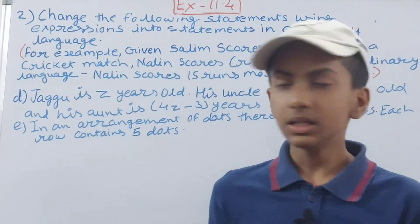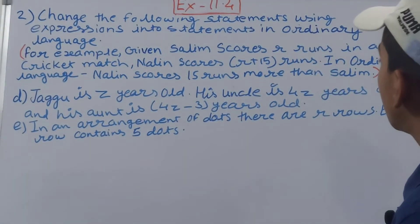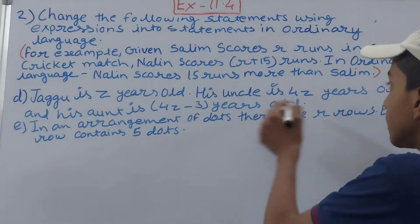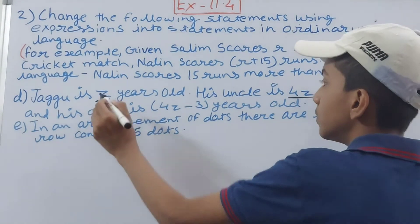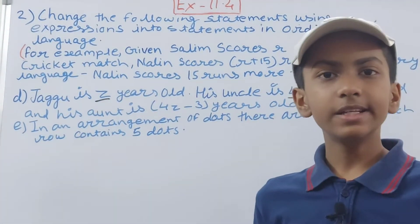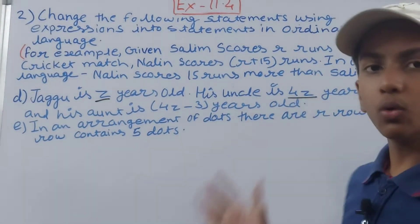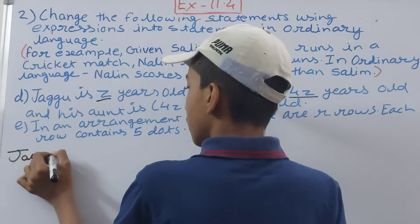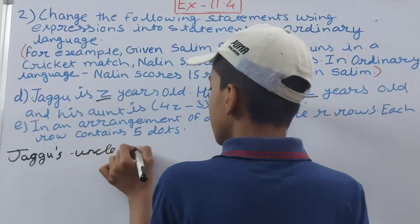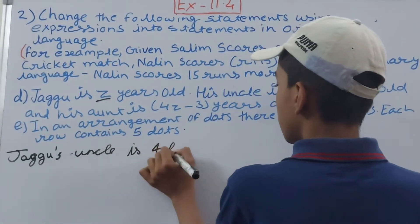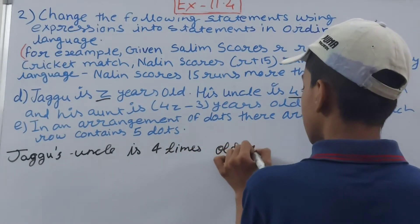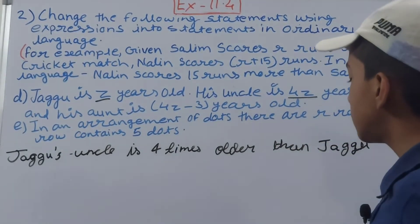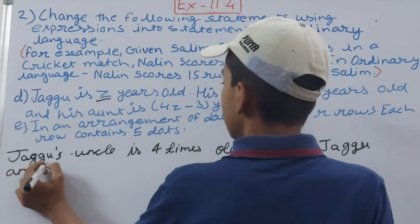Part D: Jagu is z years old, his uncle is 4z years old, and his aunt is 4z minus 3 years old. Jagu's uncle is 4z years old and Jagu is z years old, which indicates that Jagu's uncle is 4 times the age of Jagu — so we can say 4 times older than Jagu. We write: Jagu's uncle is 4 times older than Jagu.